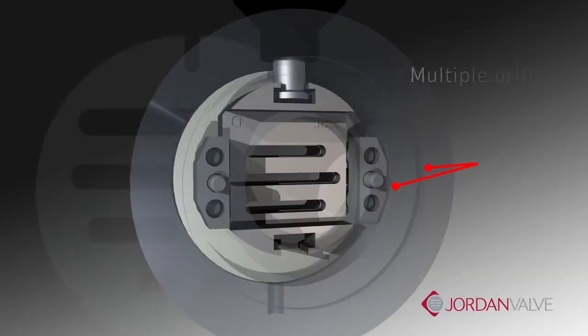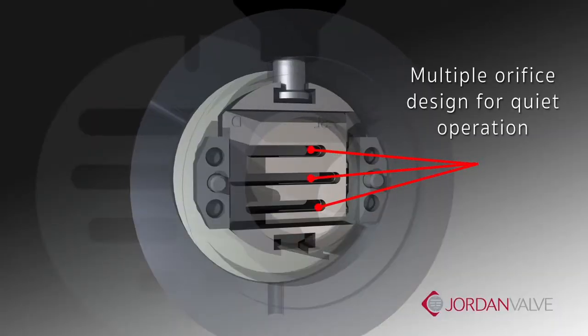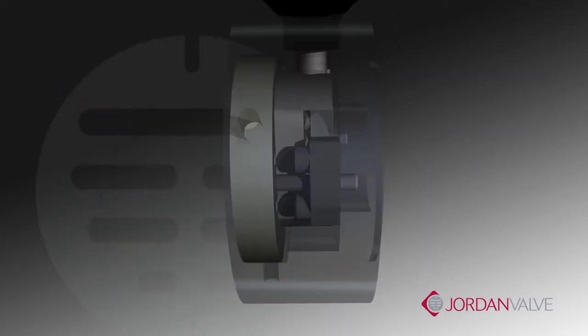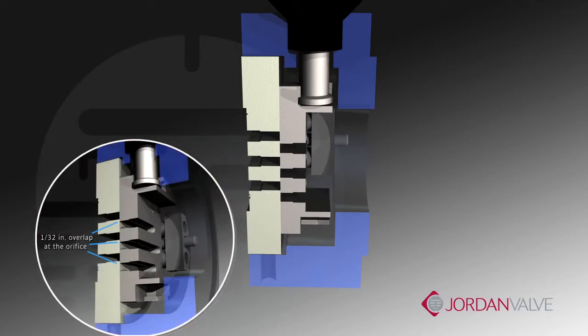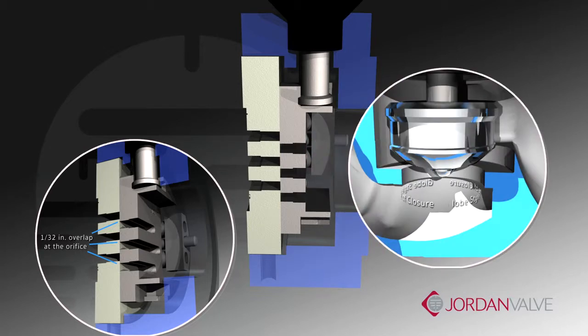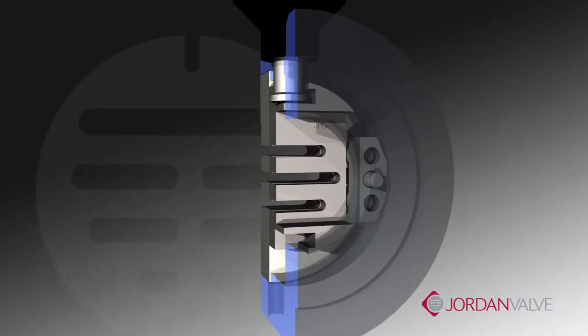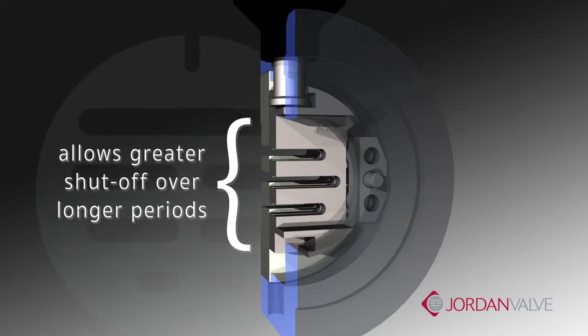Quiet operation is maintained by the multiple orifices in both the plate and the disc, dissipating the flow stream. In addition, each orifice is engineered with a 1/32nd of an inch overlap that corresponds with the plate orifice, creating an area of closure, and not a line of closure. This area of closure ensures better shutoff over longer periods of operation.